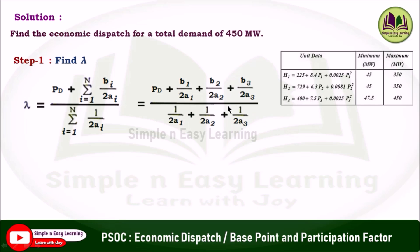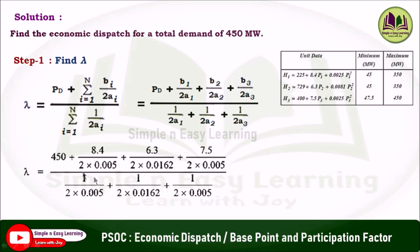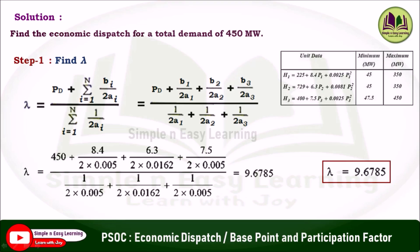Here, a1, a2, a3 are the coefficients of P1², P2², and P3² in the cost function, and b1, b2, b3 are the coefficients of P1, P2, and P3 in the cost function respectively. Substituting the values — demand is 450, b1 is 8.4 — and dividing through the respective 2a terms, we get lambda equal to 9.6785.